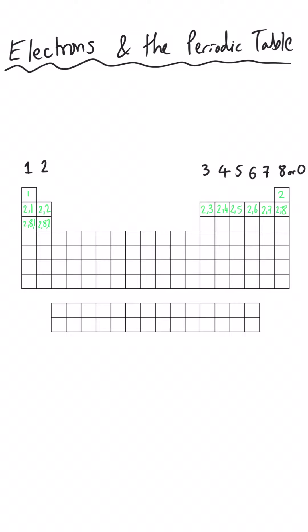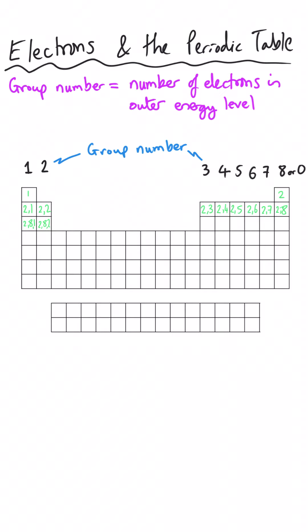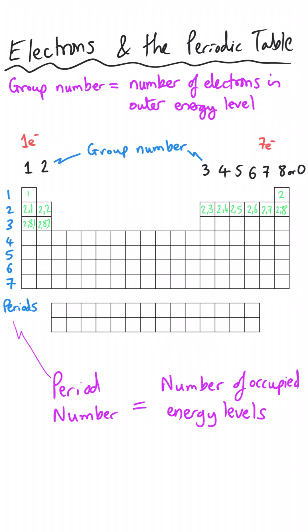Other rules about electrons important to carry from GCSE level relate to the periodic table. The columns of the periodic table are called groups, and all elements in a particular group have the same number of electrons in their outer energy level — equal to the group number. So group one elements have one electron in their outer shell, and group seven elements have seven. Similarly, the rows — called periods — tell us how many occupied energy levels there are: period one has one occupied energy level, period two has two, and so on.